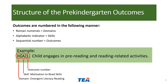In this example, the outcome is 3A1. The Roman numeral indicates domain 3, which is emergent literacy reading. It is skill A, which is motivation to read. And it is the first outcome in this skill area.